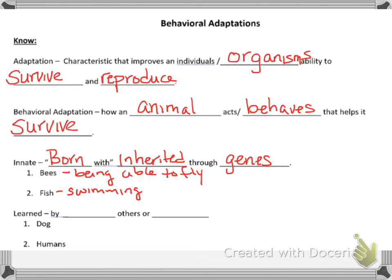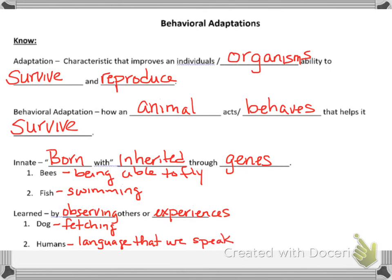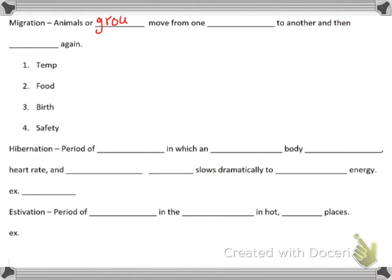A learned behavior is something you learn by observing others or through experiences — you're taught it. Dogs fetching and shaking paws are taught behaviors. Humans speaking — when we learn to talk, that's a learned thing; we didn't come out knowing how to do that.